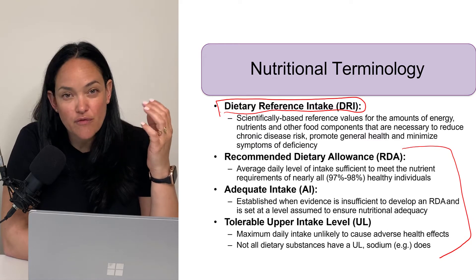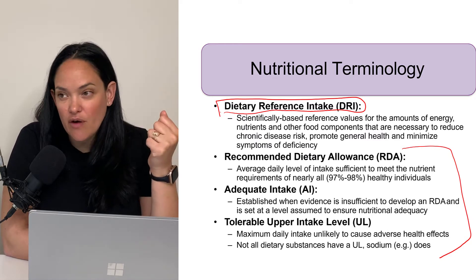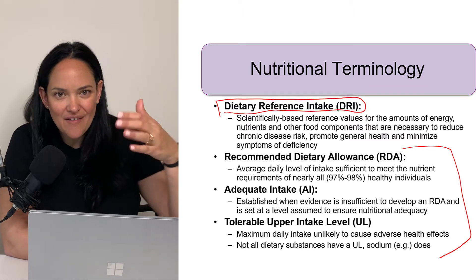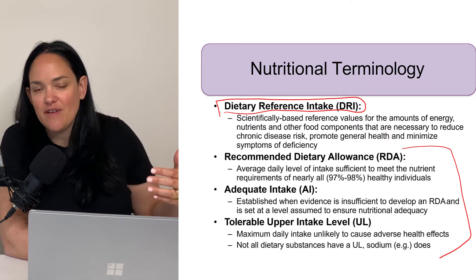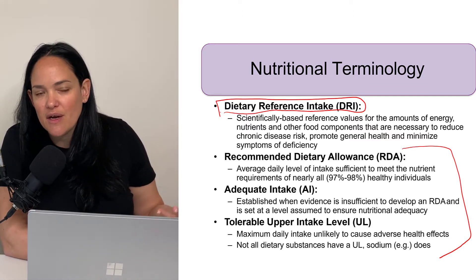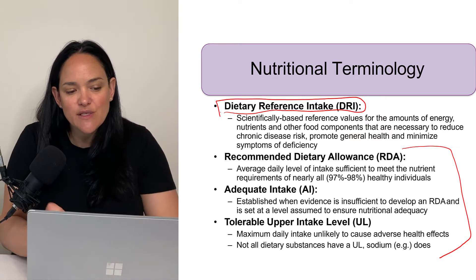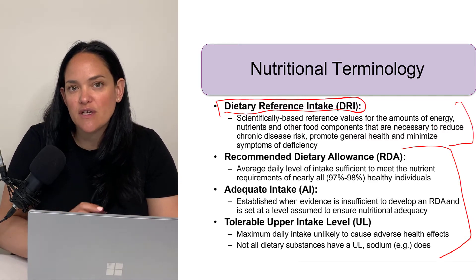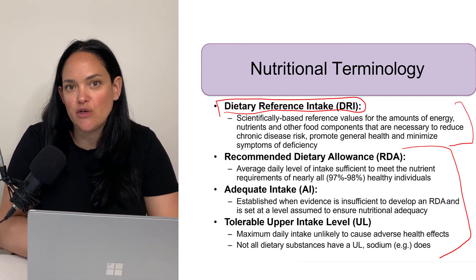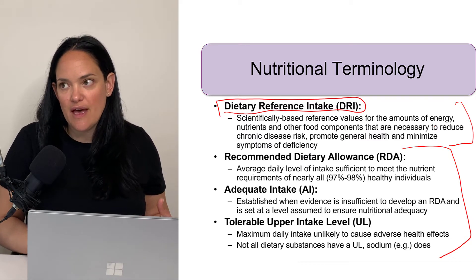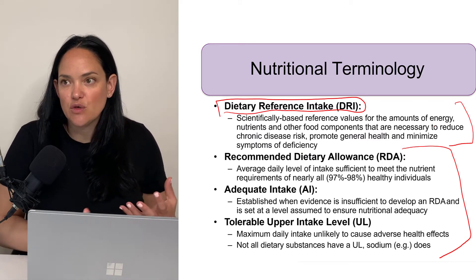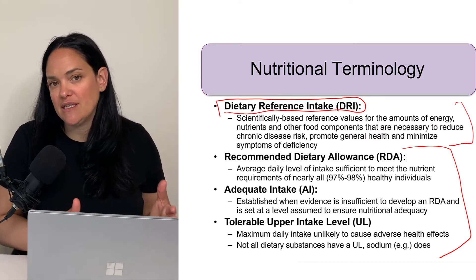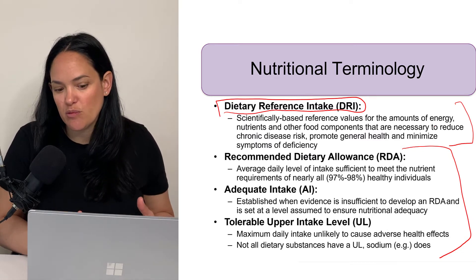If I want to know if their vitamin A is adequate, or if their sodium is excessive, I have to have reference values to compare it to — finding out how much they consume is not enough. That's what DRIs do. They're scientifically determined reference values that tell us what kind of range of nutrient intake is going to promote health.